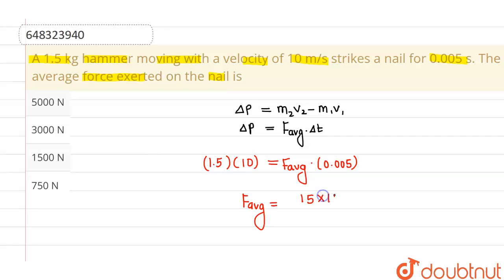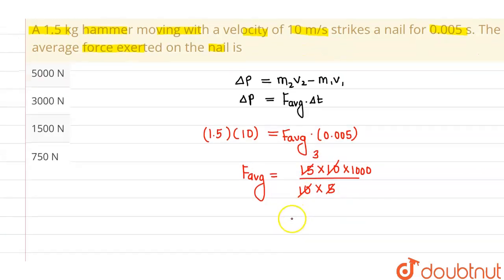15 into 10 divided by 10 into 5. And here I have removed decimal from 0.005 and I will have to multiply it with 1000. Now this 10-10 will cancel out, this 5 will cancel out with 15 by 3 times, so overall